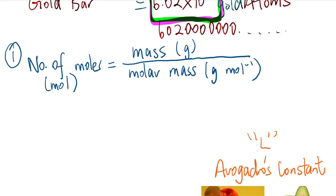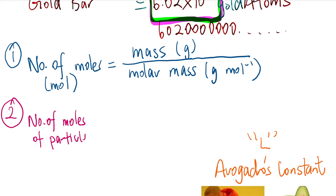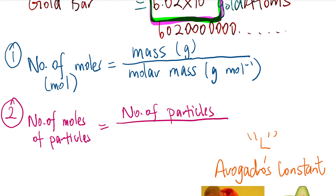The second formula is: number of moles of particles = number of particles ÷ L. When I write L, you should know it means Avogadro's constant, which is 6.02 times 10 to the power 23. So later on you can just write L instead of the full value.